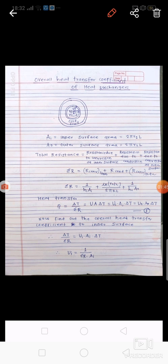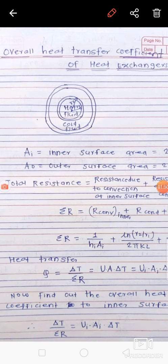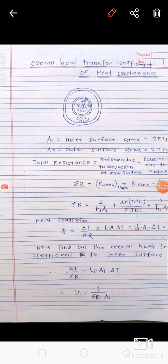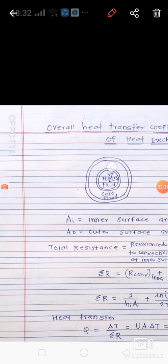Now consider the geometry: the inside radius of the central pipe is r1, and the outer surface of the central pipe has radius r2. So the thickness of the central pipe is r2 minus r1. Hot fluid flows in the central pipe and cold fluid flows in the circumferential pipe. We have to find out the overall heat transfer coefficient for this arrangement.